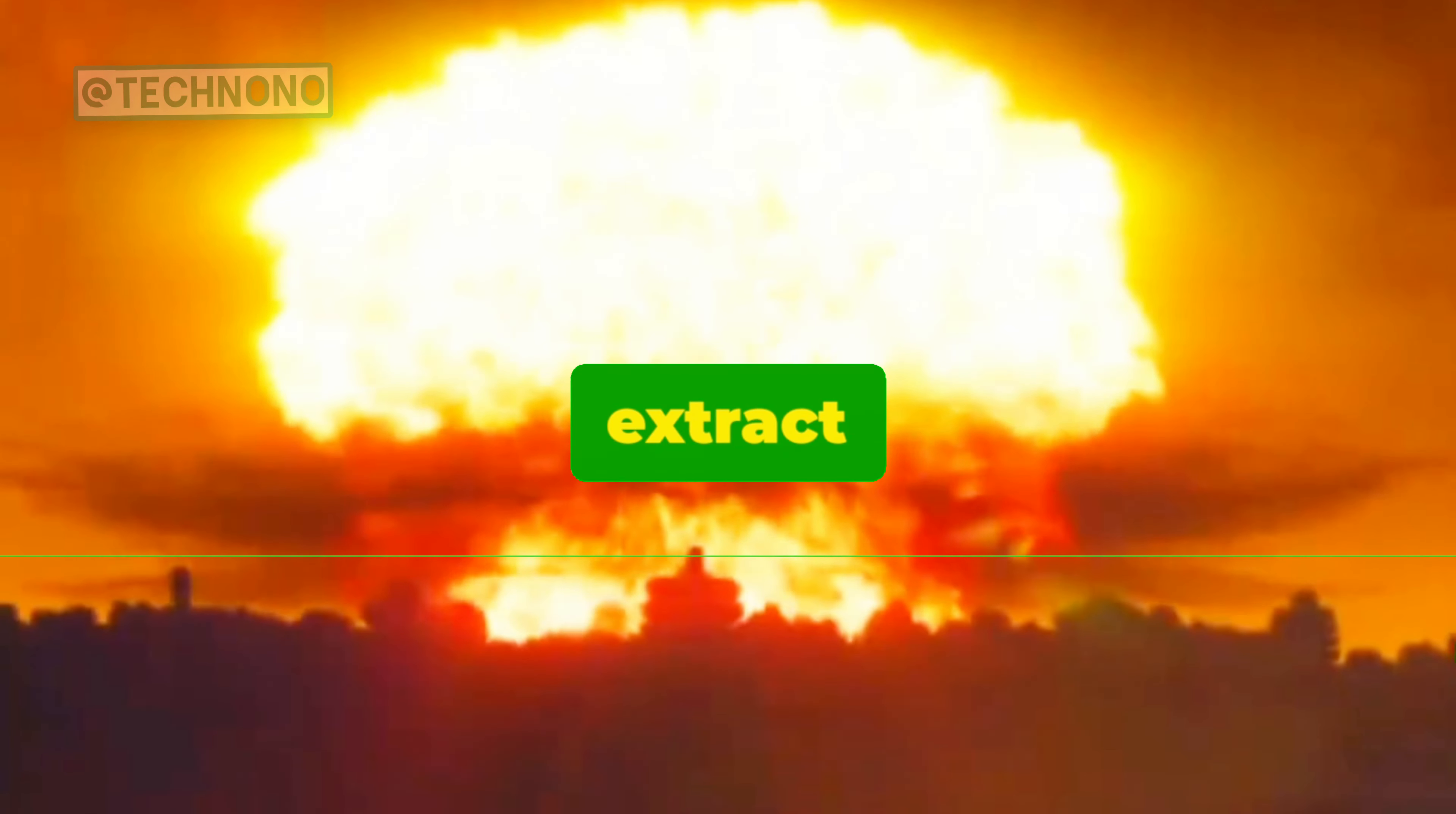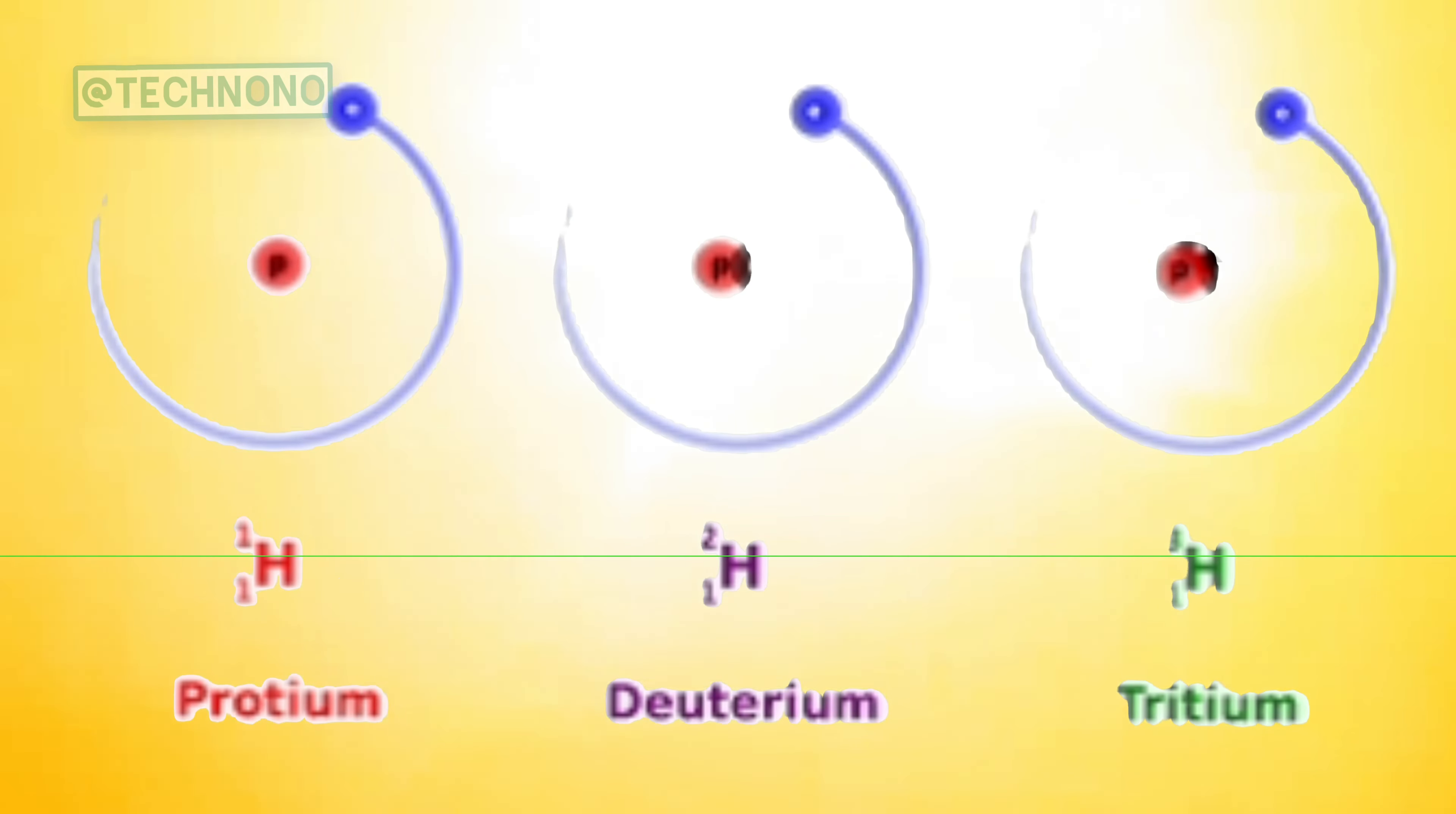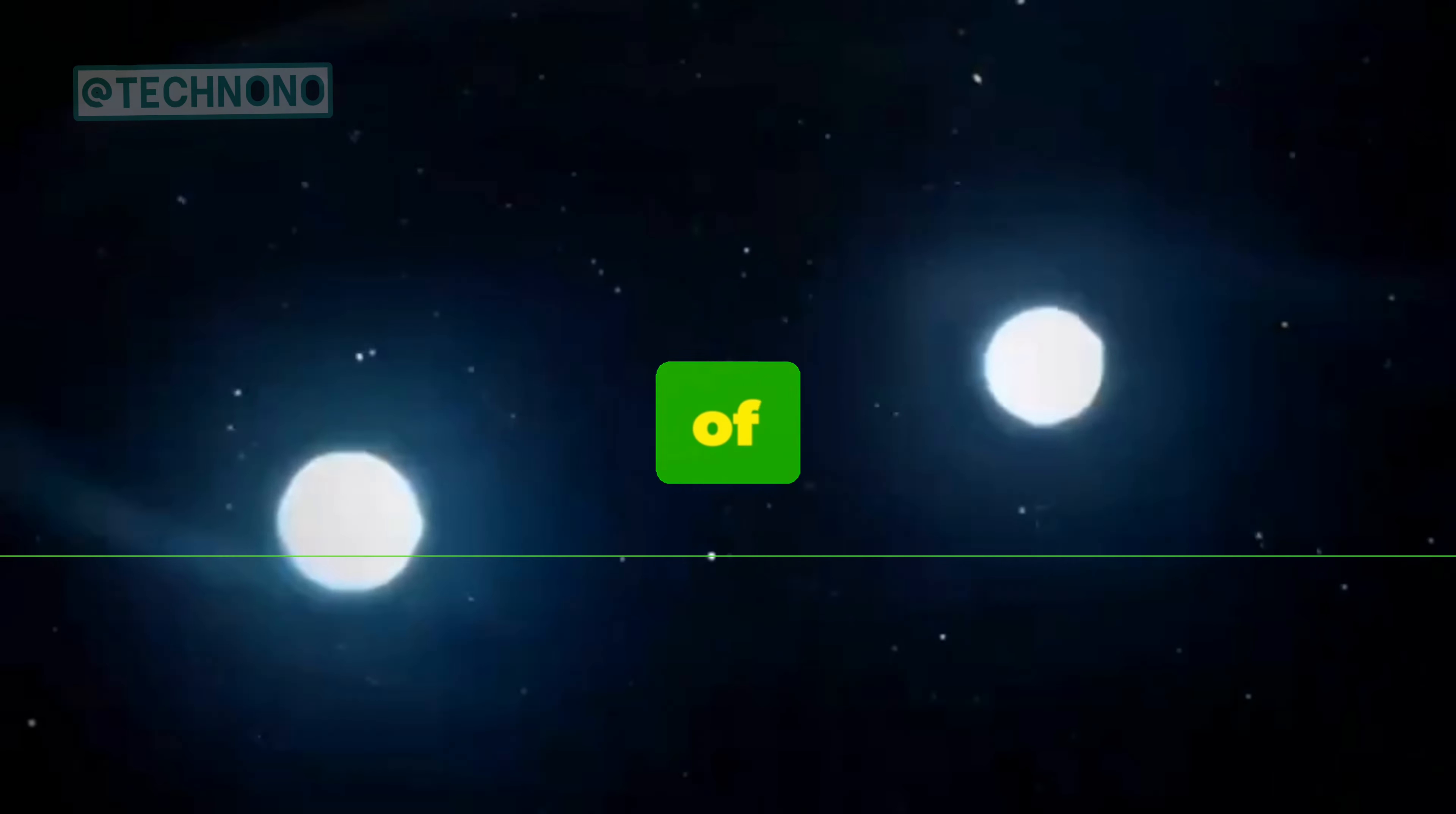Cold fusion attempts to extract energy by fusing the nuclei of hydrogen isotopes, called deuterium and tritium. This is the process of nuclear fusion.